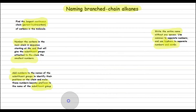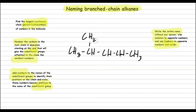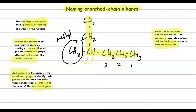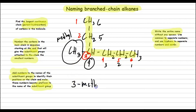How about this example? The first thing to do is find the longest continuous chain. Many will think a shorter path is the parent hydrocarbon — which is wrong. This longer chain is the parent hydrocarbon. The substituent here is methyl. Starting from right to left gives number 4 for the branch, while left to right gives number 3 — so we choose left to right. The name of this alkane is 3-methylhexane.